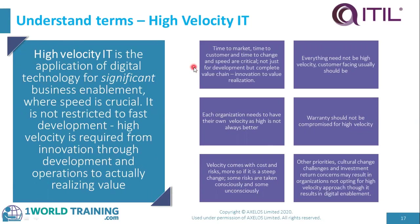Breaking it down: time to market, time to customer, time to change, and speed are critical — not just for development, but for the complete value chain from innovation to value realization. Everything need not be high velocity, but customer-facing processes usually should be. Each organization needs to have their own velocity, as high is not always better. Some organizations may prefer to work at a slightly slower speed. Warranty should not be compromised for high velocity. Velocity comes with cost and risks, more so if it is a steep change. Some risks are taken consciously and some unconsciously — the faster an organization changes, the more risks it will have.